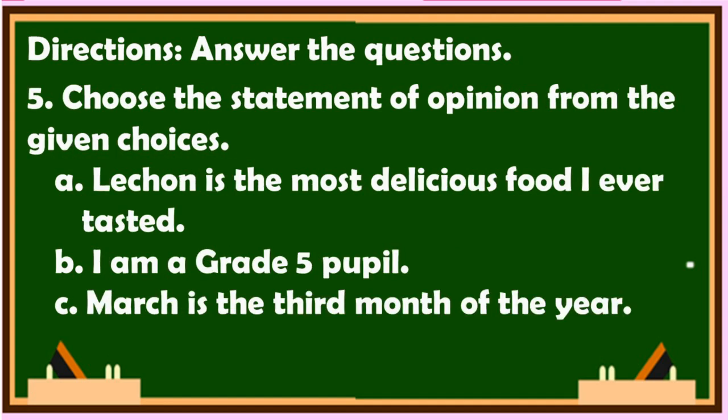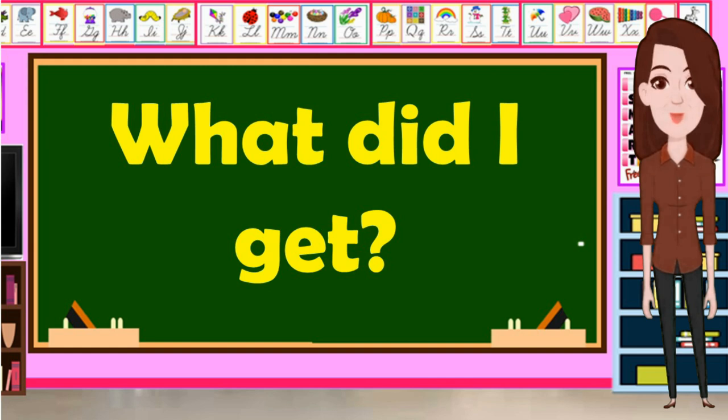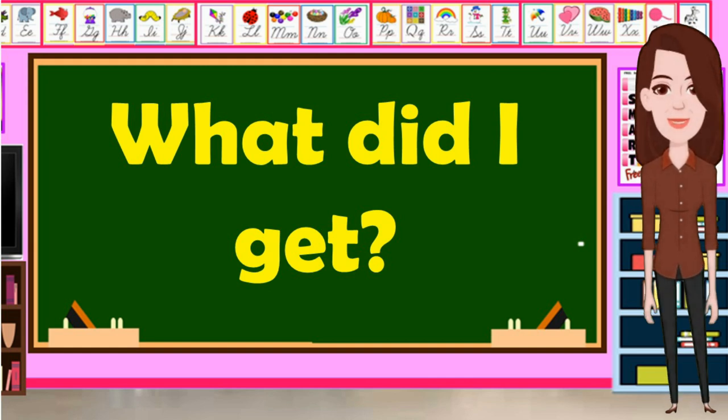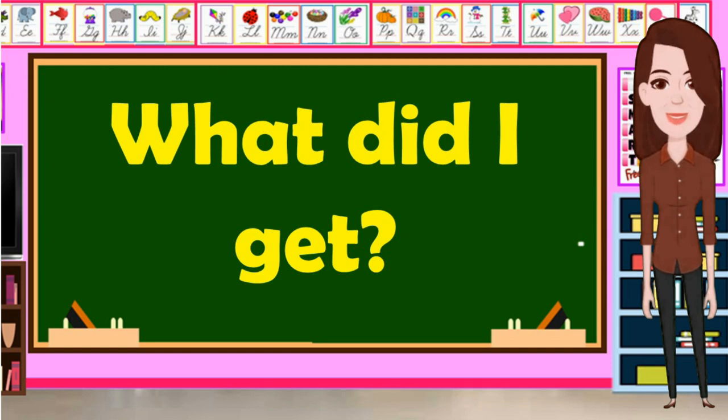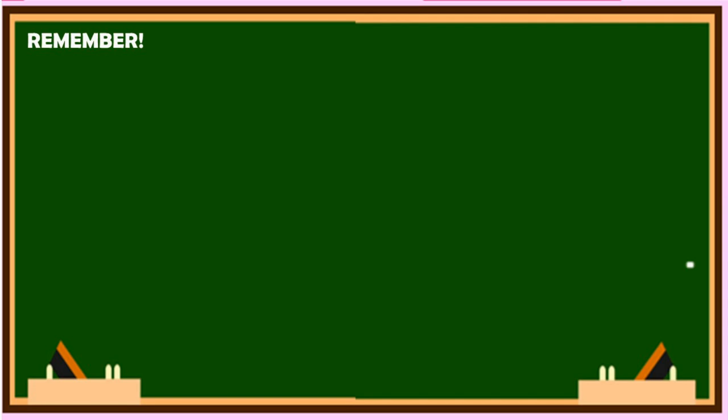Number five, choose the statement of fact: A. Lechon is the most delicious food I've ever tasted. B. I am a grade five pupil. C. March is the third month of the year. Before we proceed to the next activity, let us go over and remember the important ideas you have gained from the lesson.